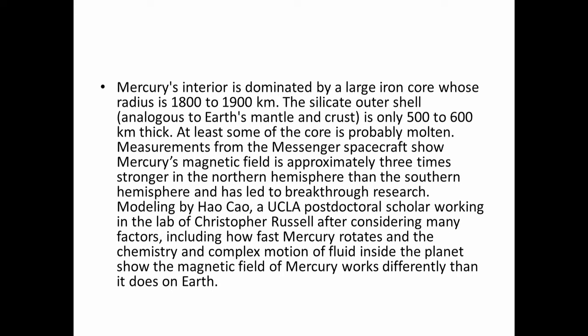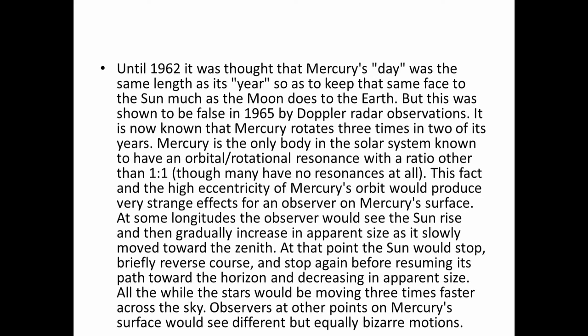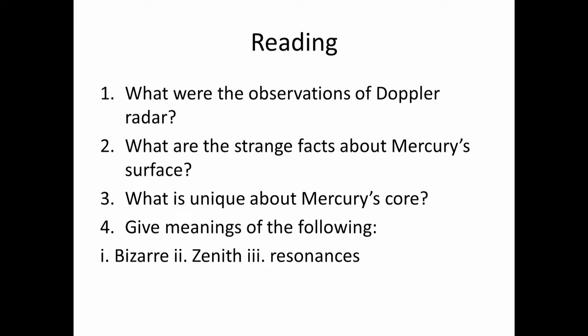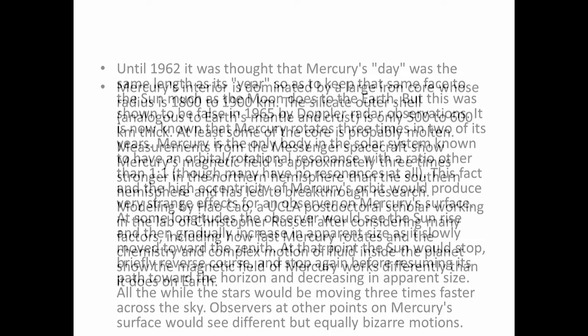What is unique about Mercury's core? Mercury's interior is dominated by a large iron core whose radius is 1800 to 1900 km; the silicate outer shell is only 500 to 600 km thick; at least some of the core is probably molten. You should give answers in your own words, bringing variety to the sentence structure without changing the facts or scientific jargon. Look up the vocabulary words from context as your homework.